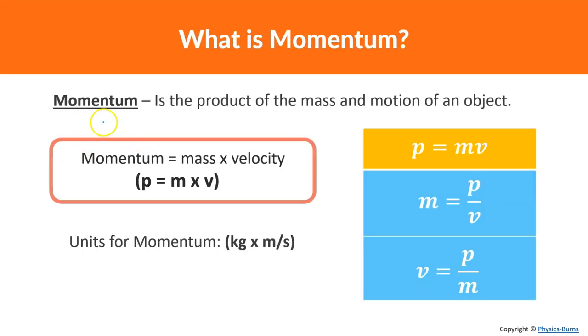So what is momentum? Momentum is the product of the mass and motion of an object. Momentum is equal to the mass times velocity, represented by this lowercase p. And this is the main formula right here. These are the algebraically manipulated formulas if you want to copy it down or memorize it. And the units we primarily use are kilograms times meters per second.